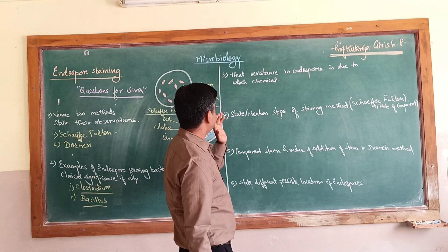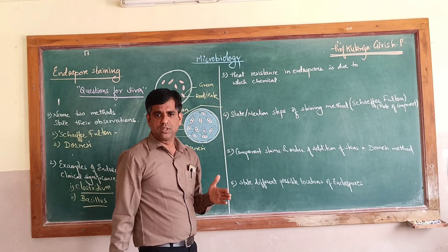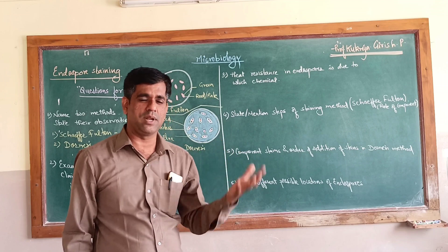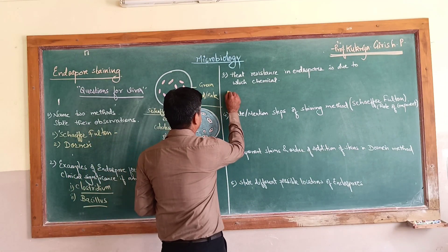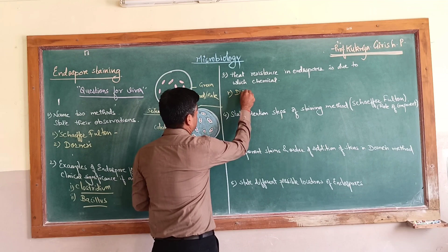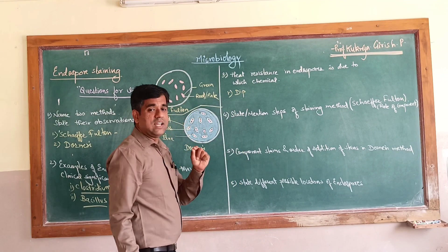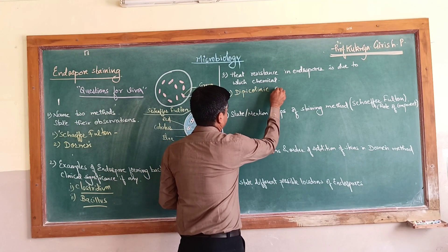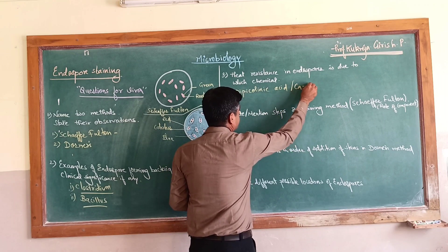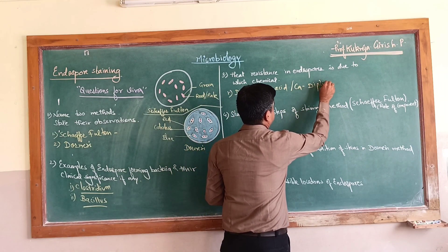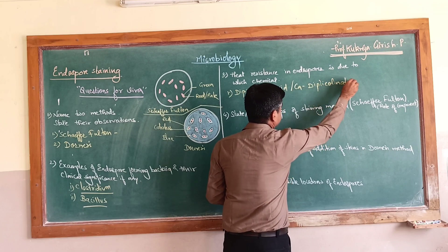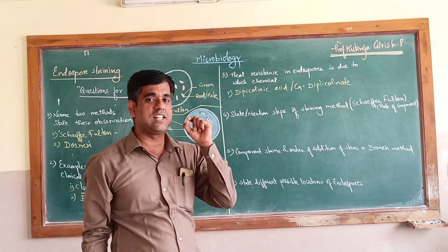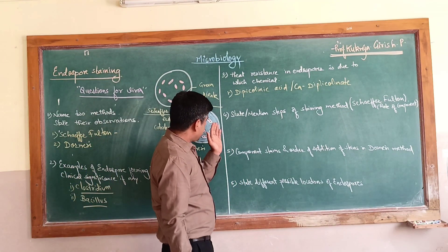What is the heat resistance in endospores due to? There are many reasons including spore coats, but the key chemical indicated in heat resistance is dipicolinic acid, complexed with calcium as calcium dipicolinate. That is the major chemical implicated in the heat resistance of these endospores.